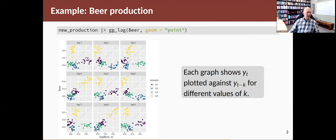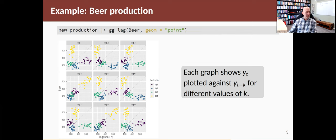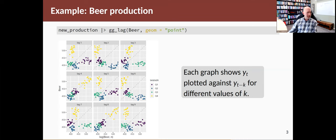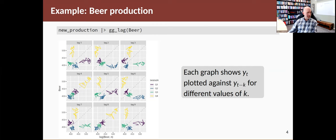So we get a graph showing the relationship between points k periods apart. Now, if I don't use geom equals point and just take out that and use the default geom, I get this graph, which is exactly the same, except that instead of dots, I have lines. So there's the one with points, there's the one with lines. These are connected in time order.